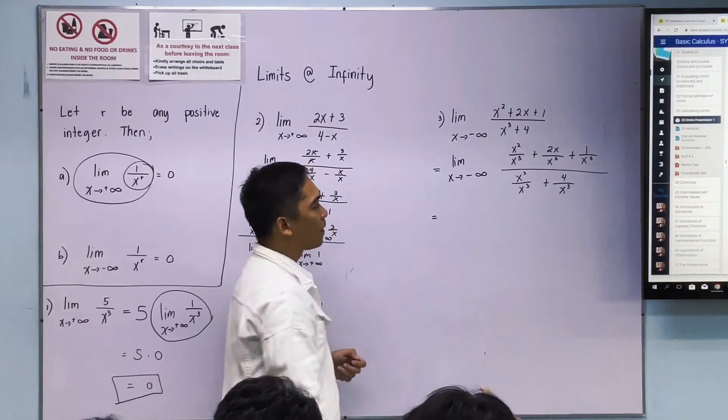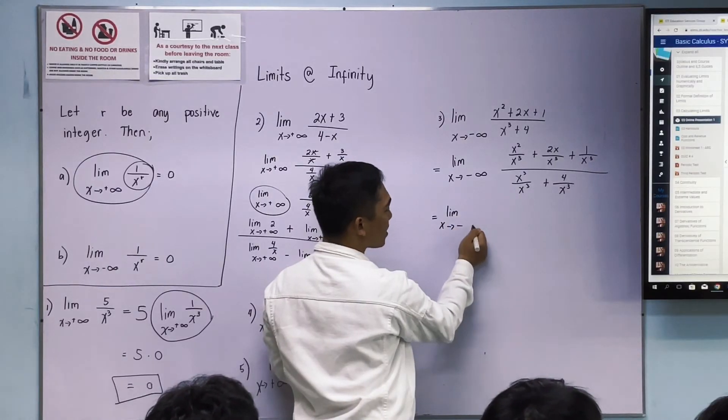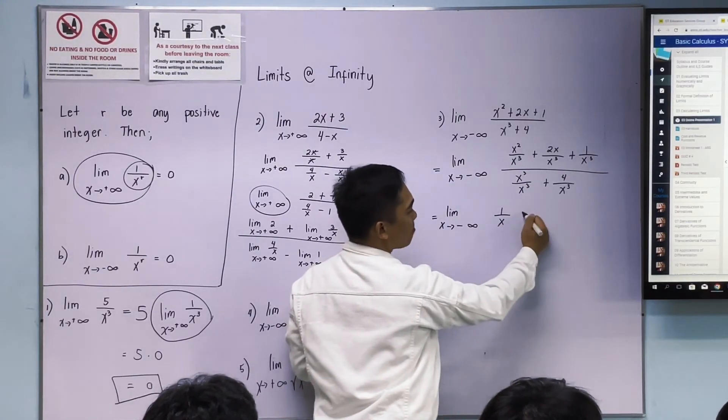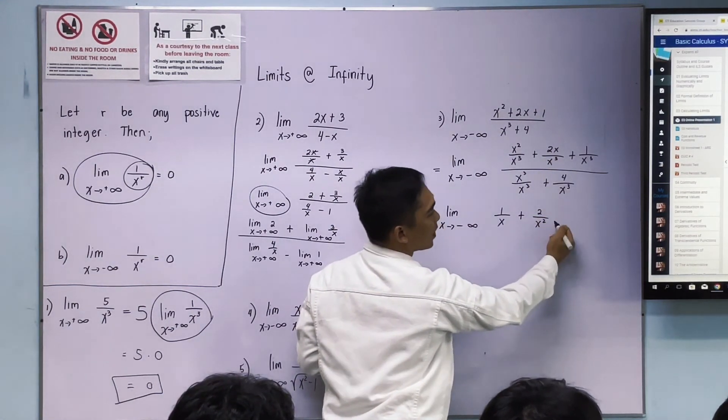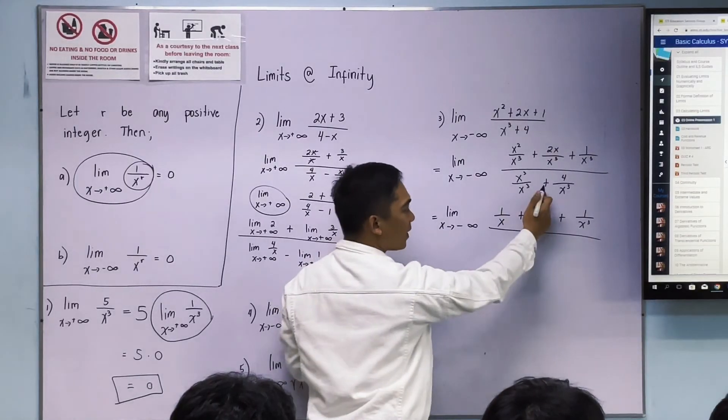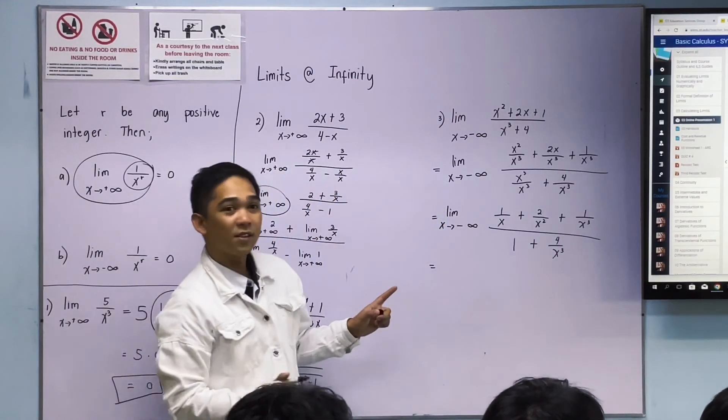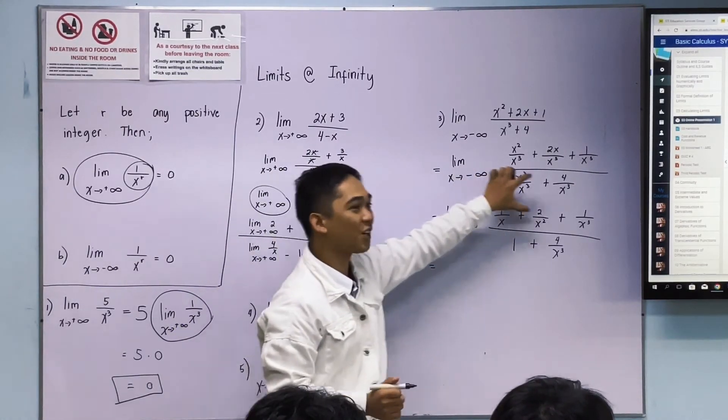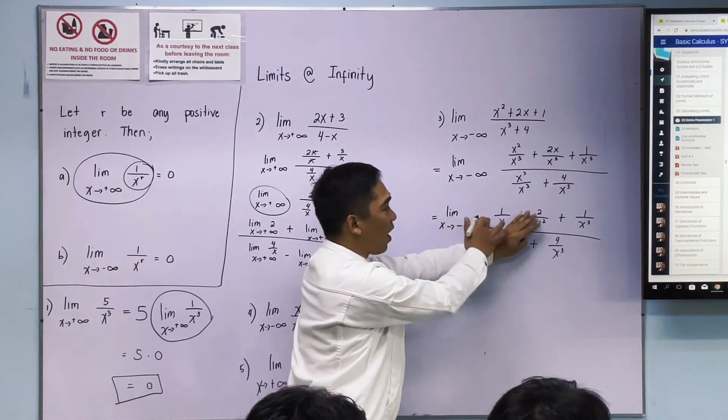Let's see what is really correct. Simplify first. Copy: limit as x approaches negative infinity. x squared over x cubed is 1 over x, plus 2x over x cubed, over 1 plus 4 over x cubed.